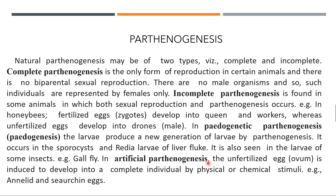Artificial parthenogenesis is not a normal process — it is induced by stimulating the unfertilized egg to develop into a complete individual by physical or chemical stimuli. For example, annelid and sea urchin eggs can be made to undergo artificial parthenogenesis in research.